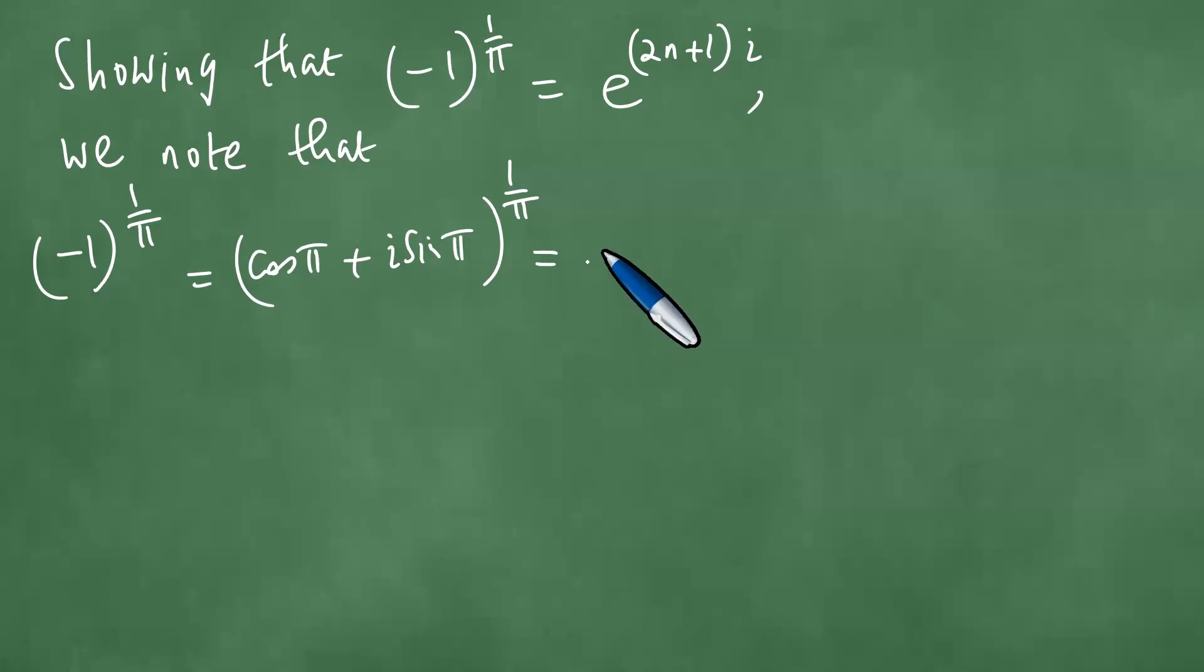But, because the period of the sine and the cosine functions, they have the same period of 2 pi n, this can also be written as cosine of 2 pi n plus pi plus i the sine of 2 pi n plus pi.